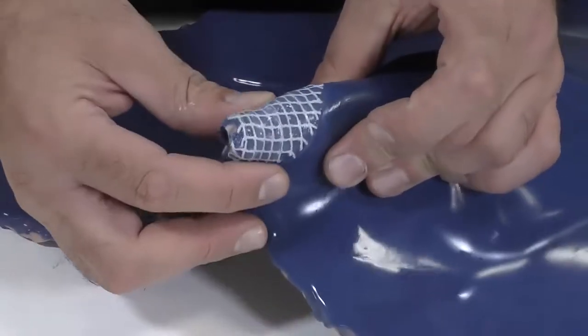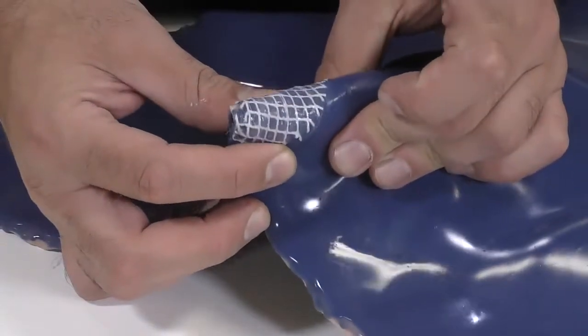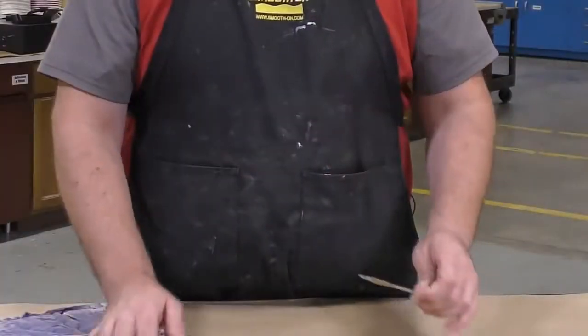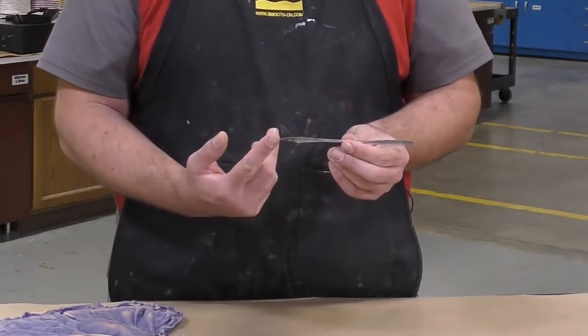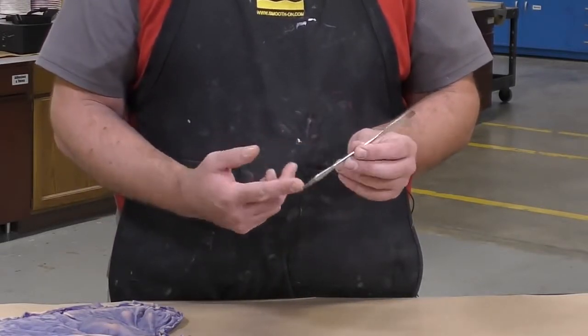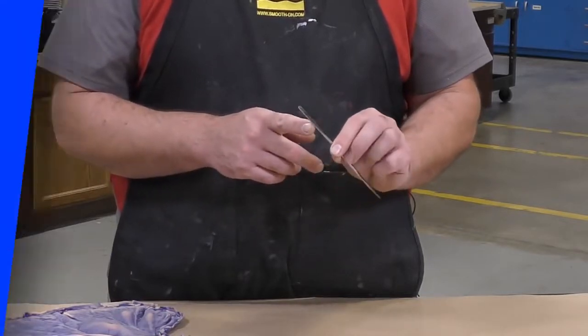This type of reinforcement cloth is available from our distributors. We're going to use the stainless steel sculpting tool that is available at your local art supply store and comes in a variety of shapes and sizes.